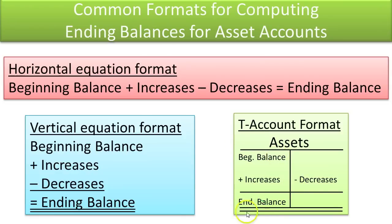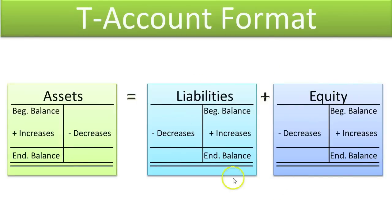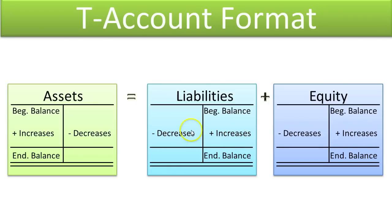For assets, we track the normal balance on the left-hand side. Liabilities and equity track that on the right-hand side. As you can see, assets are on the left-hand side of the balance sheet equation. Therefore, the beginning balance, increases, and ending balance will normally be on the left, and the decreases on the right. Liabilities and equity, since they are on the right-hand side of this equation, have their beginning balance and increases on the right and decreases on the left.